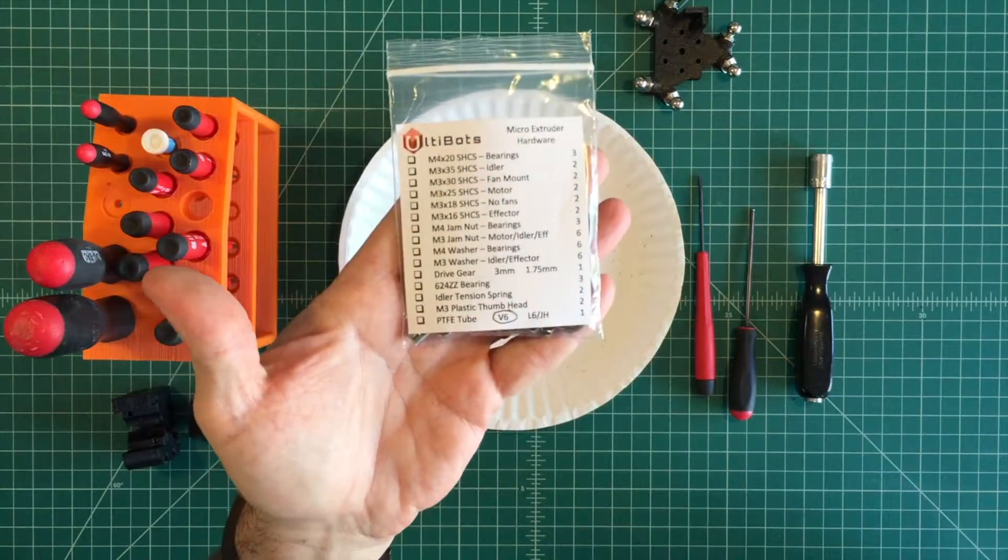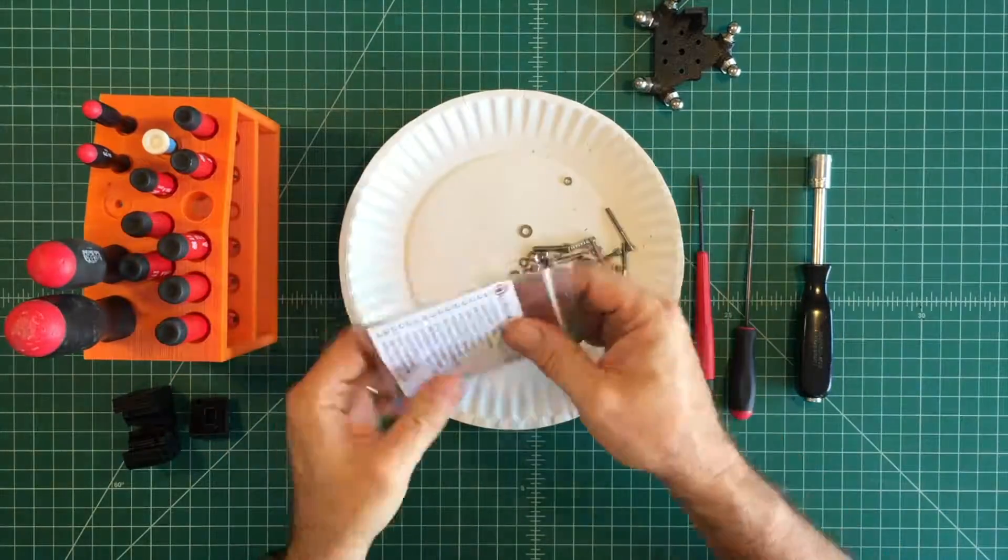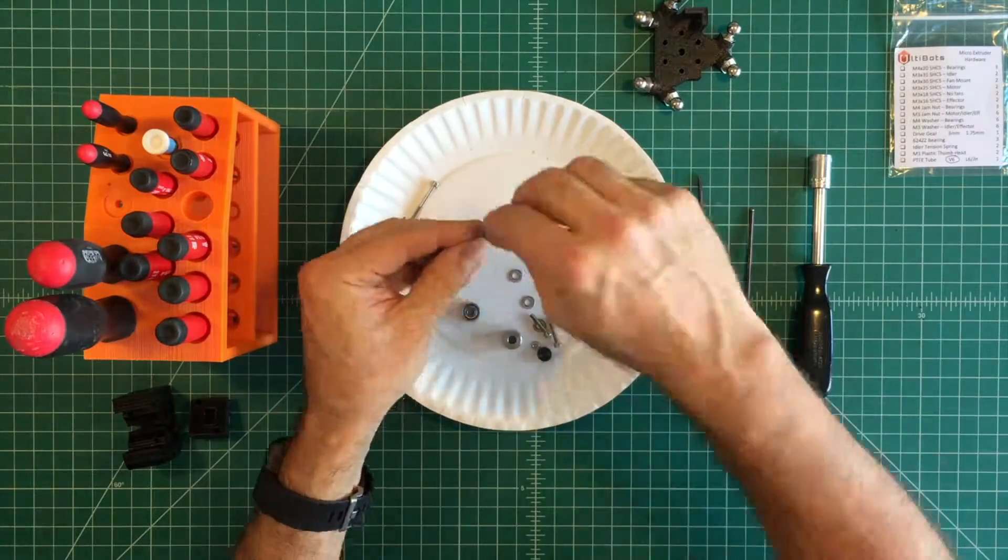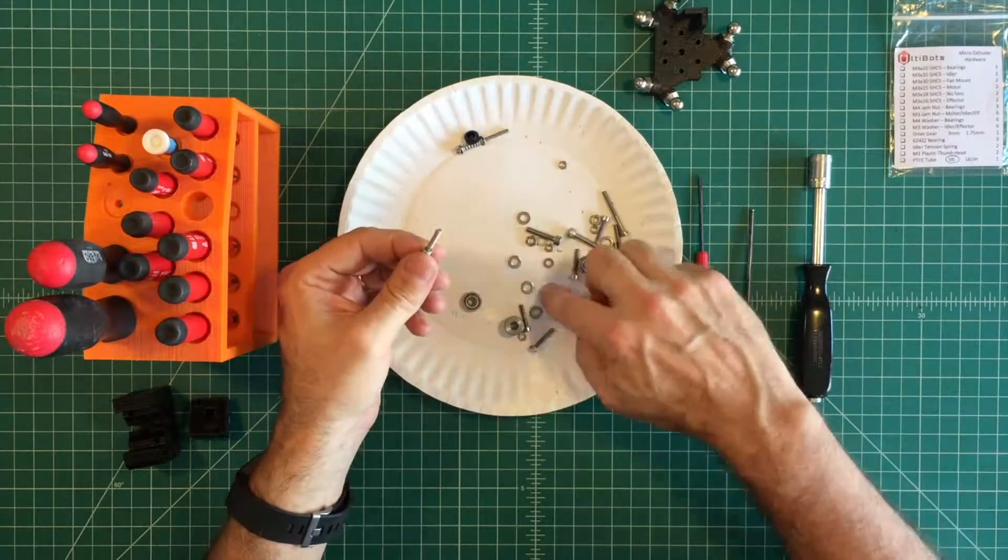When adding hardware to the Micro Extruder it is helpful to reference the bag label. Spill out the contents and isolate the longest M3x35 screws, M3 washers, springs, and thumb nuts.